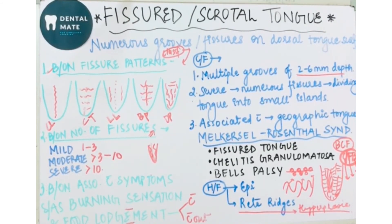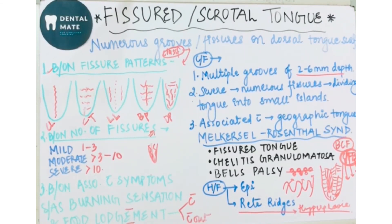Regarding treatment: patients should be advised to keep brushing the tongue and perform tongue scraping to prevent symptoms — that is, burning sensation and food lodgment. So this is all about fissured tongue or scrotal tongue.